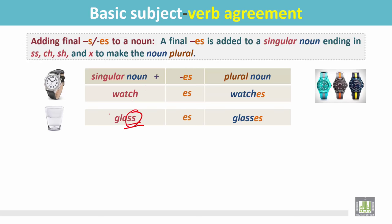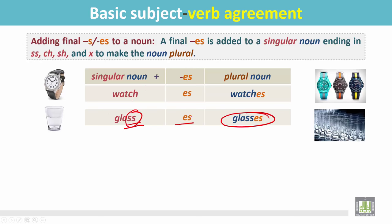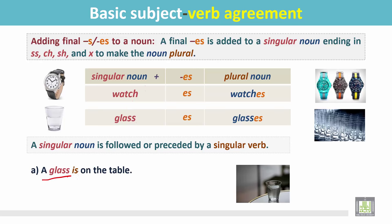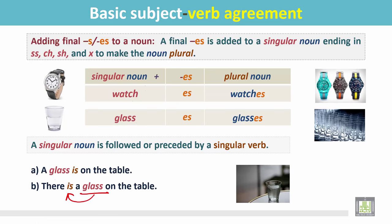A singular noun is followed by or preceded by a singular verb. For example: 'A glass is on the table' — the singular noun 'glass' is followed by the singular verb 'is.' Also, we can say: 'There is a glass on the table,' where the singular noun is preceded by the singular verb 'is.'